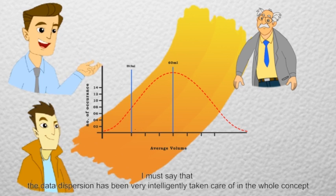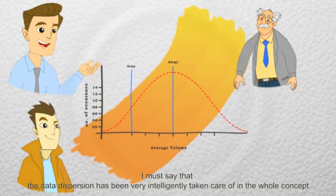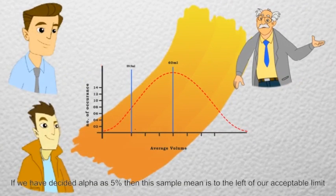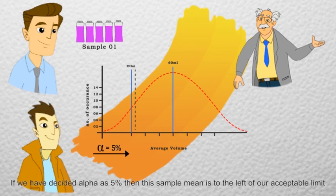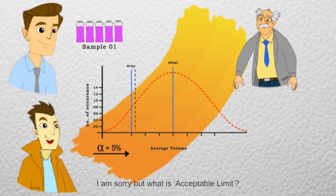I must say that the data dispersion has been very intelligently taken care of in the whole concept. If we decide alpha as 5%, then this sample mean is to the left of our acceptable limit. I am sorry, but what is acceptable limit?